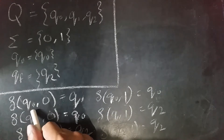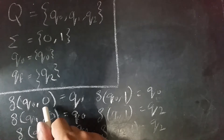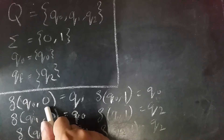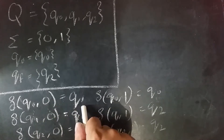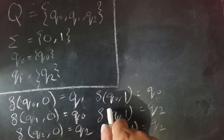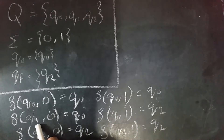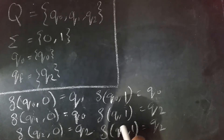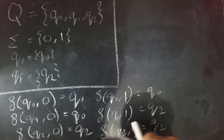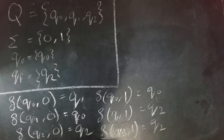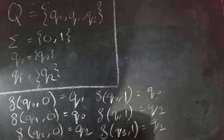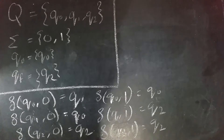On Q0, if the input is 0, then go to Q1. On Q0, if the input is 1, then go to Q0. On Q1, if the input is 0, go to Q0. On Q1, if the input is 1, go to Q2. On Q2, if the input is 0, go to Q2. On Q2, if the input is 1, go to Q2.